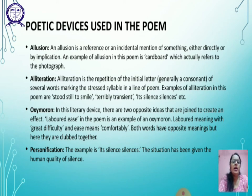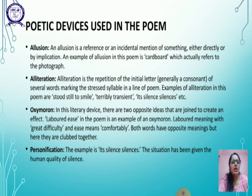The first poetic device used in the poem is allusion. An allusion is a reference or an incidental mention of something either directly or by implication. An example of allusion in this poem is 'cardboard,' which actually refers to the photograph.